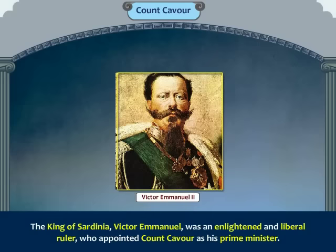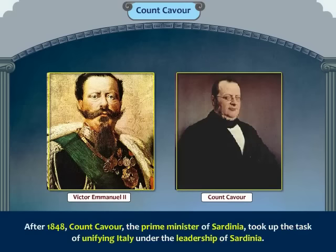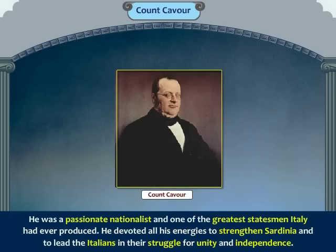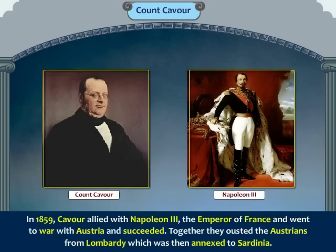The King of Sardinia, Victor Emmanuel, was an enlightened and liberal ruler who appointed Count Cavour as his Prime Minister. After 1848, Count Cavour, the Prime Minister of Sardinia, took up the task of unifying Italy under the leadership of Sardinia. He was a passionate nationalist and one of the greatest statesmen Italy had ever produced. He devoted all his energies to strengthen Sardinia and to lead the Italians in their struggle for unity and independence.